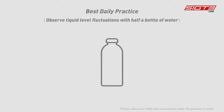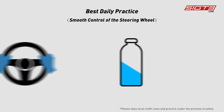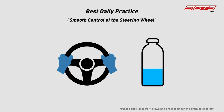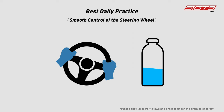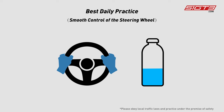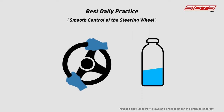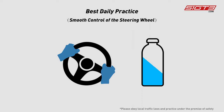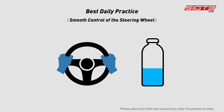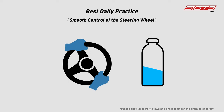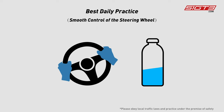The best daily practice method starts with visualizing the vehicle weight transfer. Put half a bottle of water in the car and practice weight transfer by watching the fluid level fluctuate. During each turn, operate the steering wheel as smoothly as possible. At first, you may experience strong fluid level fluctuations due to excessive steering. What we have to do is constantly practice to make the fluctuation of the fluid level as small as possible while cornering.